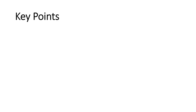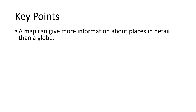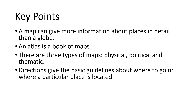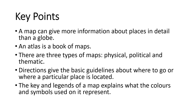Now let's refresh the topic. A map can give more information about places in detail than a globe. An atlas is a book of maps. There are three types of maps: physical, political, and thematic. Directions give basic guidelines about where to go or where a particular place is located. The key and legend of a map explains what the colors and symbols used on it represent.